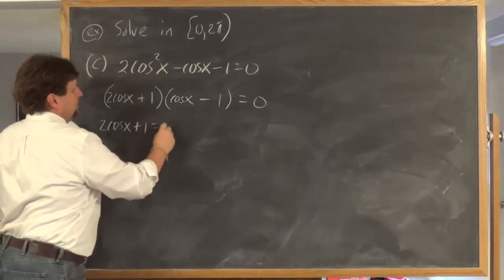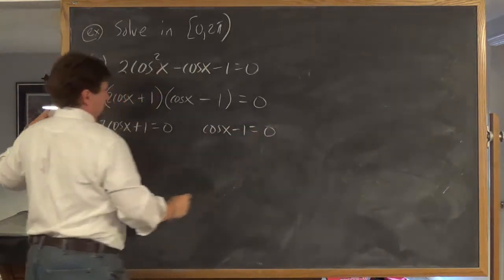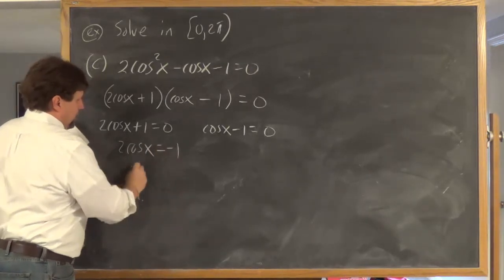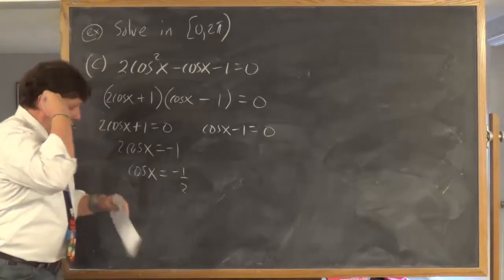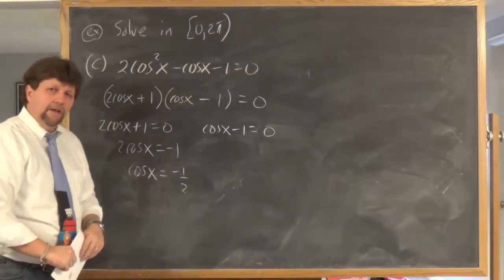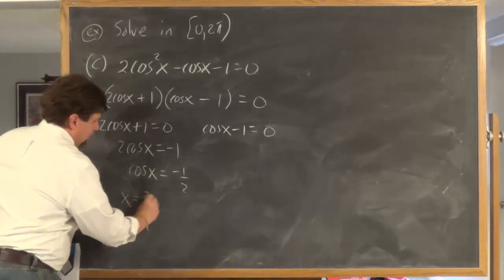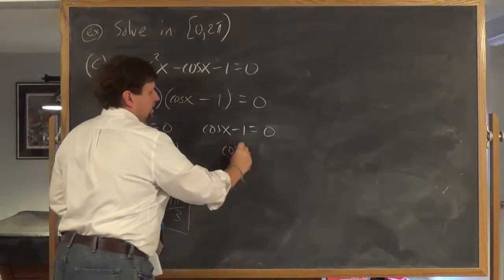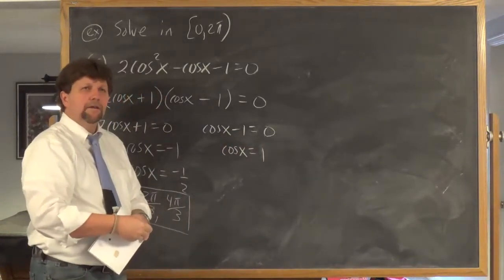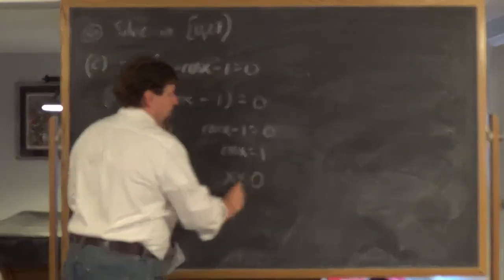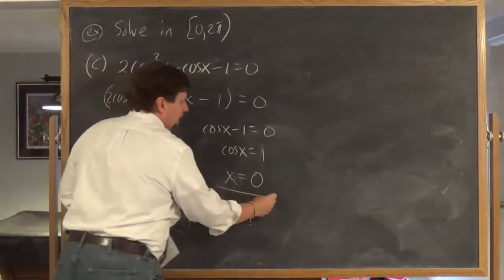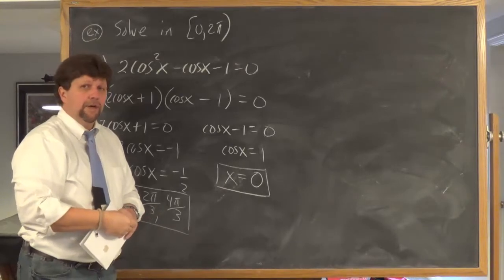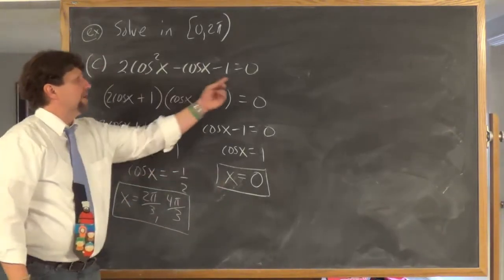Once factored, set each factor equal to zero: 2cosx + 1 = 0 and cosx - 1 = 0. For the first, subtract 1 and divide by 2: cosx = -1/2, which occurs at 2π/3 and 4π/3. For the second, add 1: cosx = 1, which gives x = 0. We don't include 2π because of the open parenthesis in the interval. These are the three solutions.